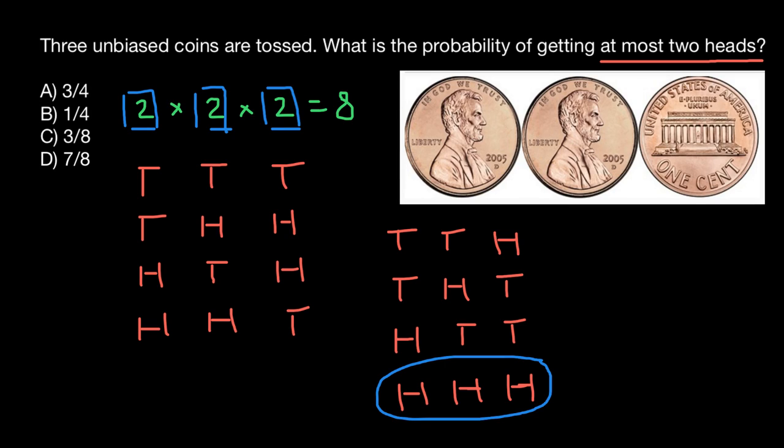For example, here we have one head, one head here, one head here. At most two heads, these variants also meet requirements of our problem. And even when we don't have heads at all, it still meets requirements of our problem. So out of eight variants, seven would meet requirements of our problem. So seven-eighths would be our answer, and this is answer D.